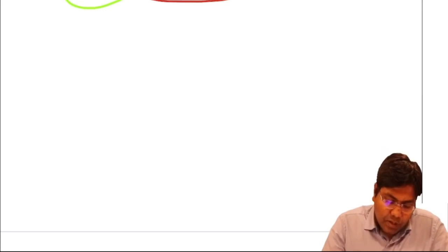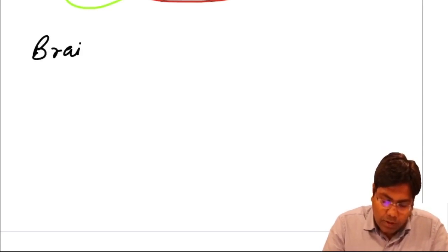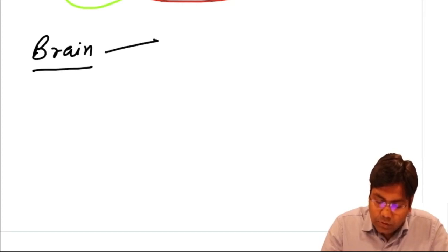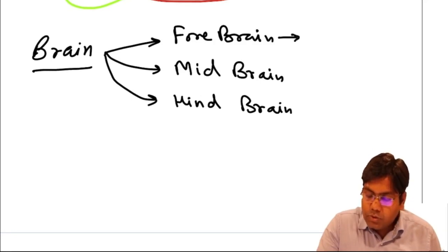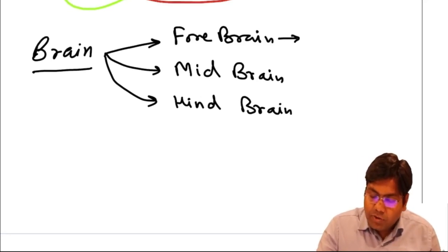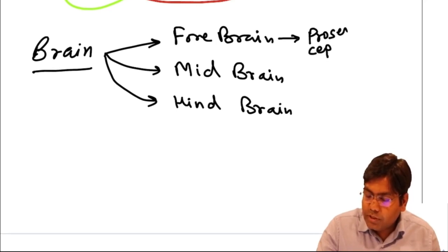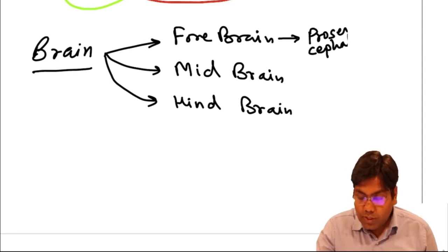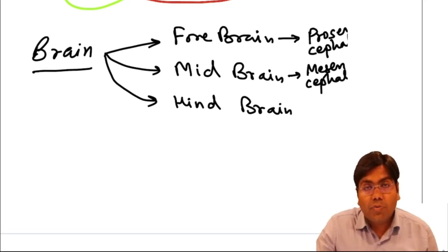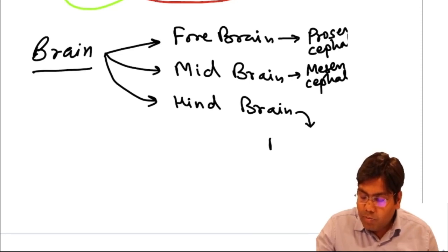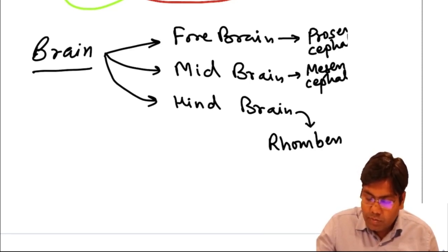When we talk about the brain, it is divided into forebrain, midbrain, and hindbrain. Forebrain is also known as prosencephalon. Midbrain is also known as mesencephalon. And hindbrain is also known as rhombencephalon.